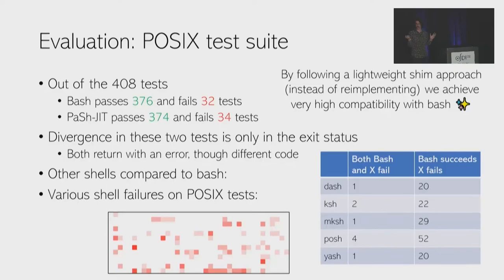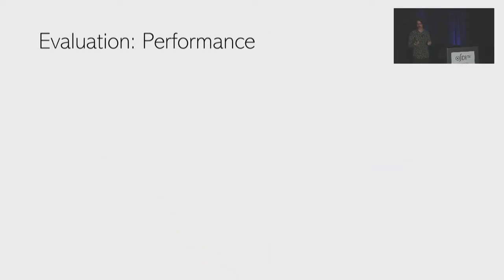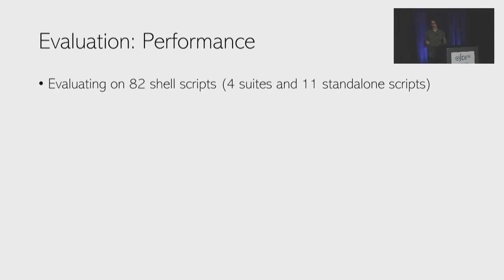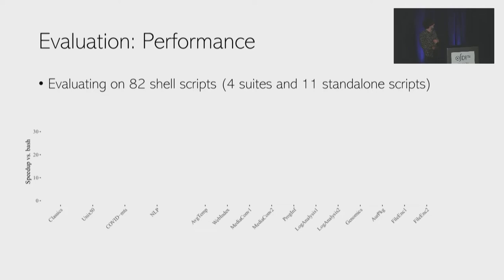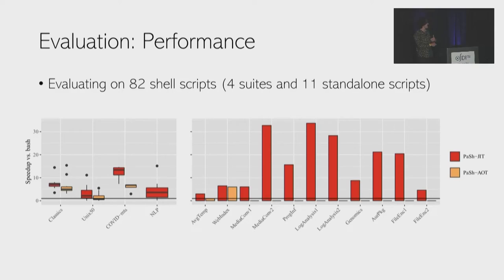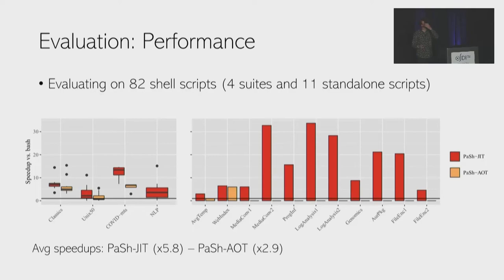For performance, we evaluated PaSh on 82 shell scripts — four suites and 11 standalone scripts. The y-axis shows speedup compared to bash. PaSh ahead-of-time cannot handle many scripts including the entire NLP suite, while PaSh JIT handles them. PaSh JIT achieves an average speedup of 5.8x compared to 2.9x for PaSh ahead-of-time. More evaluation details are in our paper.